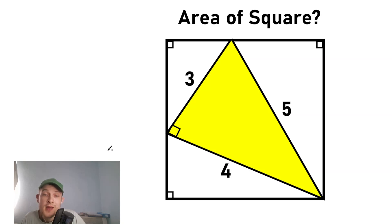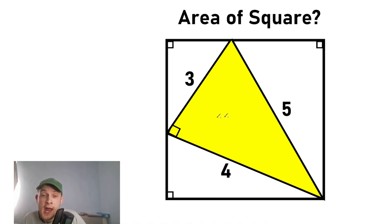Hello everyone, really interesting challenge today. We need to find the area of this square right here. We know everything about this triangle, which is inscribed into this square. We know each of the sides: 3, 4, 5, and we need to find the area of this square.